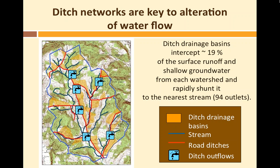Imagine one of those drainage basins: when it rains, water runs down the hill and would naturally keep going until it hit the stream, moving slowly and keeping the stream flowing. Instead, it almost makes it to the stream, hits the road, gets intercepted by the ditch, gets shunted sideways, and ends up as a high-velocity faucet dumping into the stream at 94 locations on average. Meanwhile, that little first and second-order stream back there is largely dry most of the time — it doesn't receive the runoff and doesn't get much groundwater contributing to it.